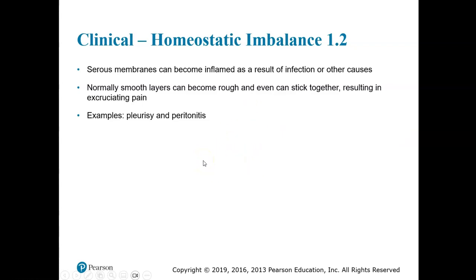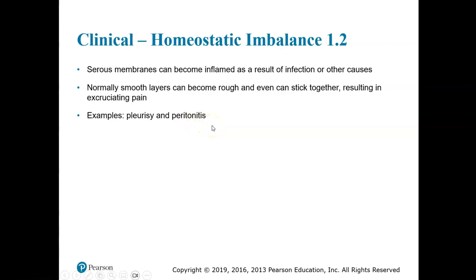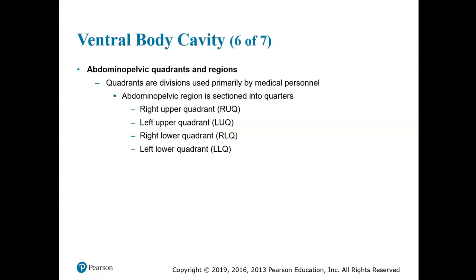Homeostatic imbalance 1.2 refers to infections of the serous membranes. Examples would be pleurisy — inflammation or infection of the pleural membrane — and peritonitis, which is inflammation of the peritoneum.